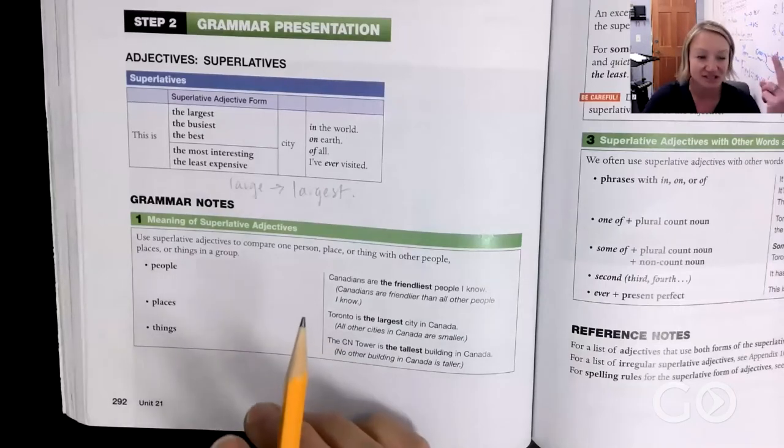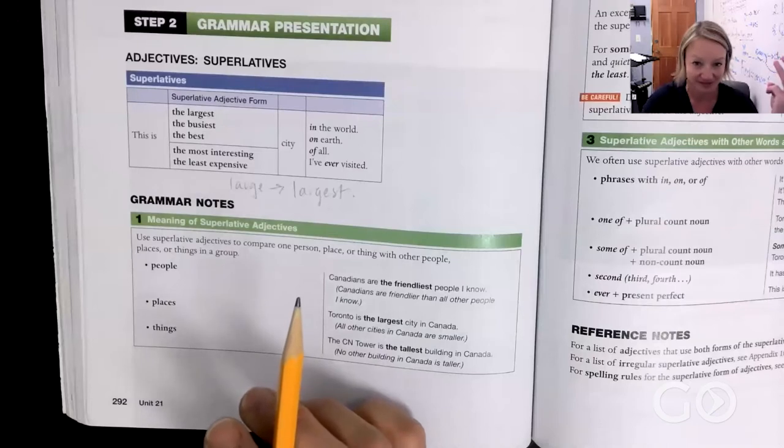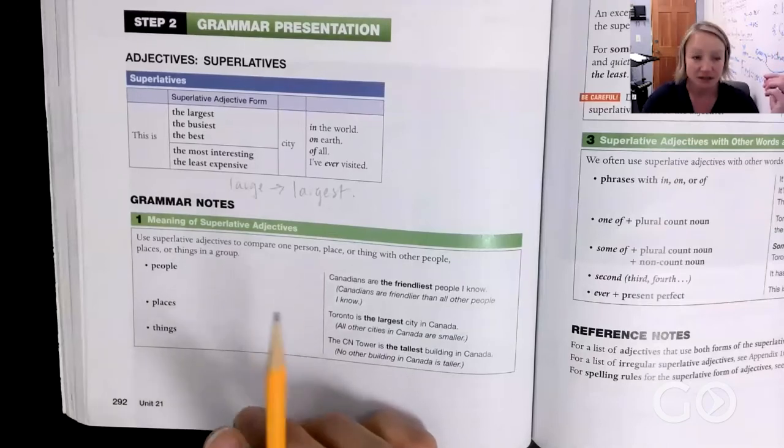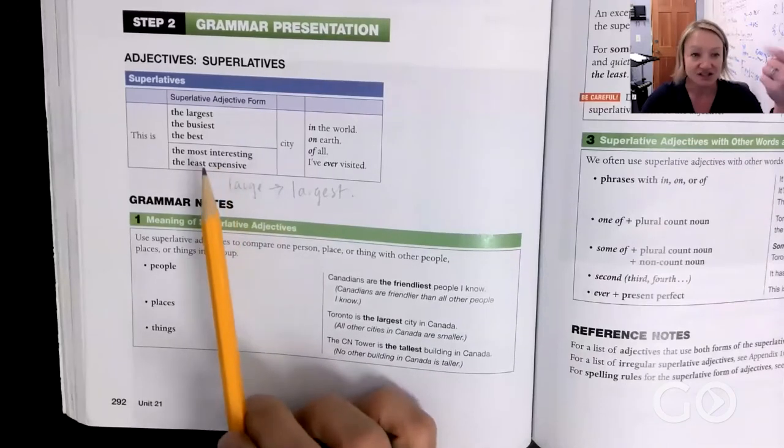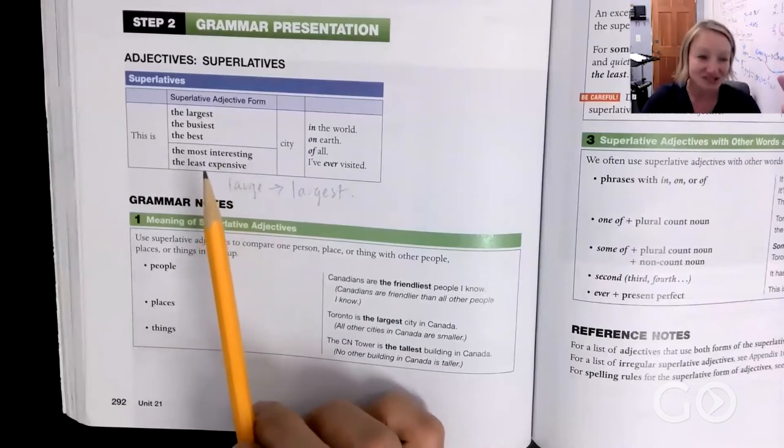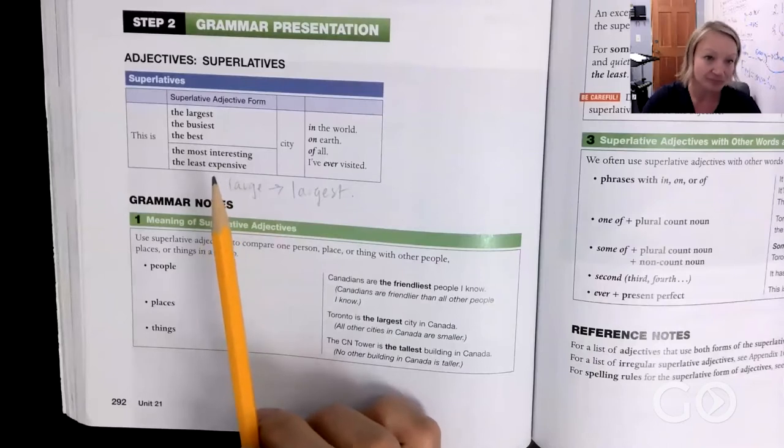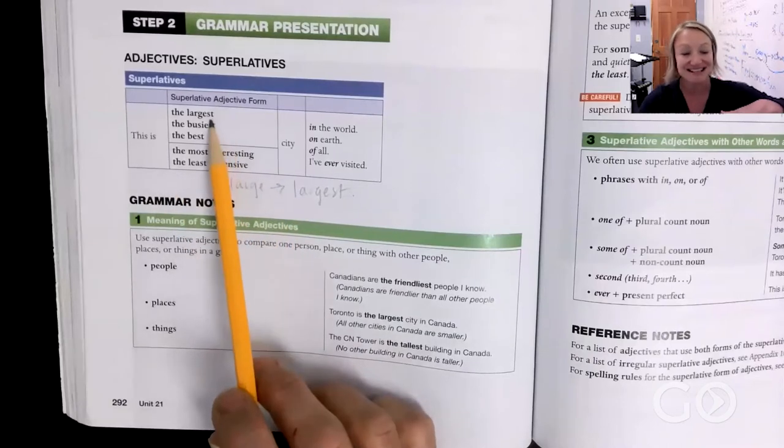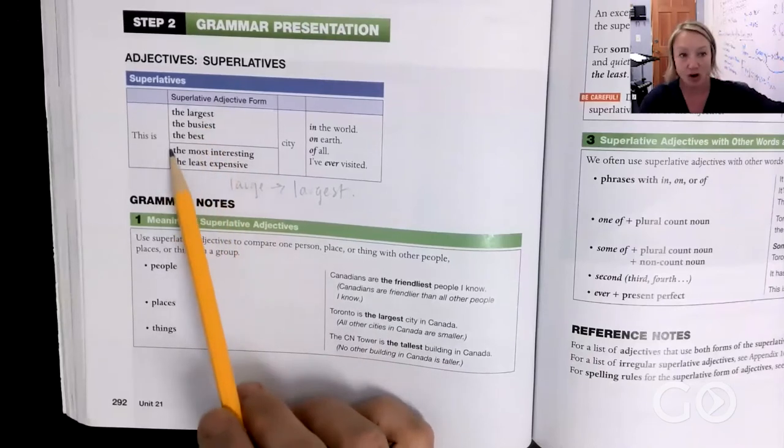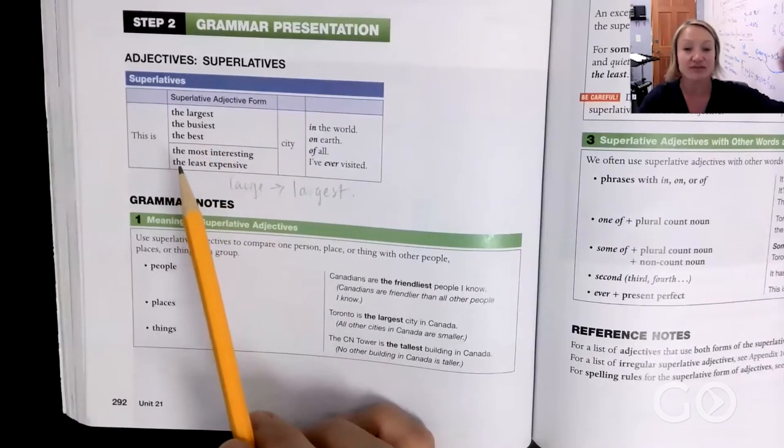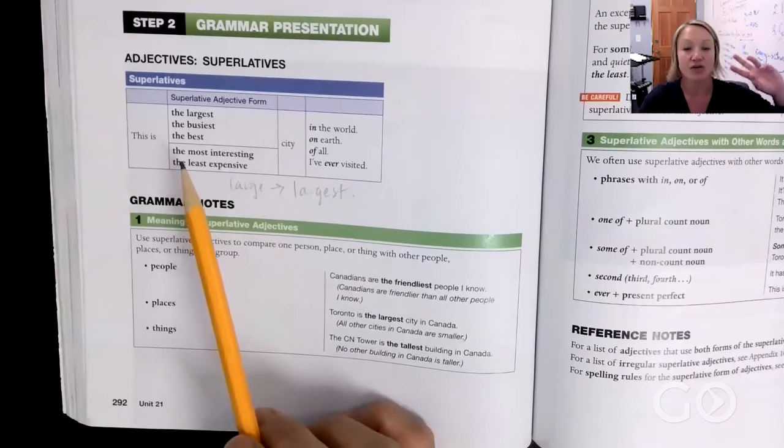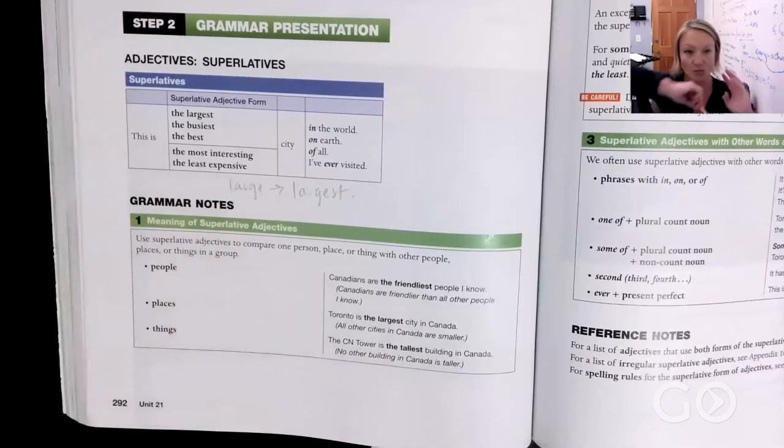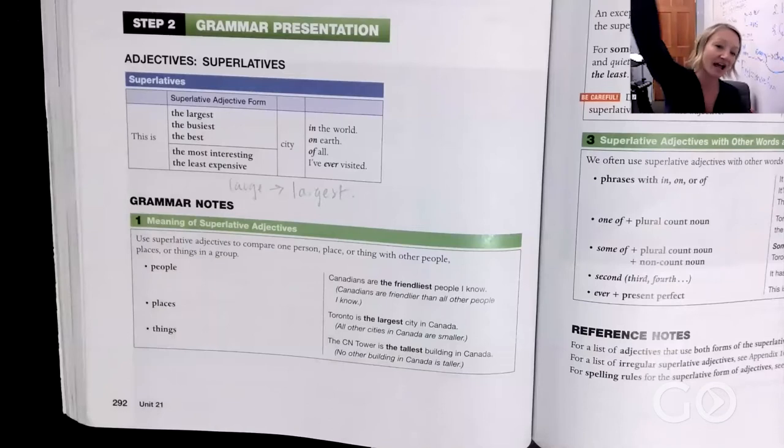Why did we use most interesting and least interesting or least expensive? Because interesting has four syllables and expensive has three. When we get above two syllables, we're not going to use -est anymore. We're going to use the most interesting or the least expensive.